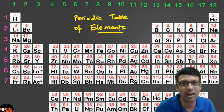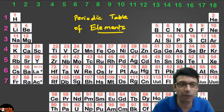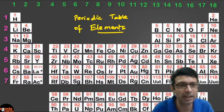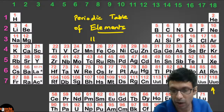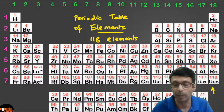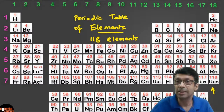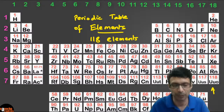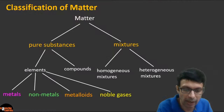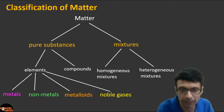This is known as the modern periodic table. There are 118 elements — you can see the last element is the 118th. Since there are 118 elements, it's a good idea to divide them into groups. Elements can be classified into different groups.